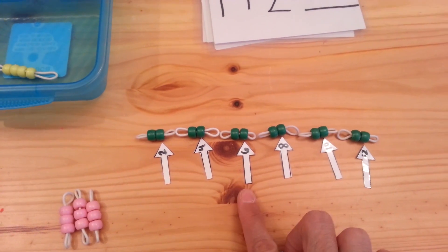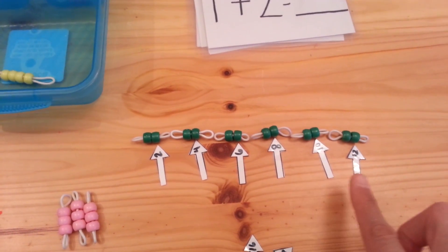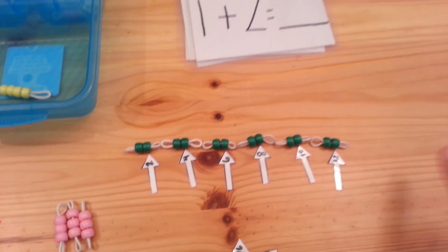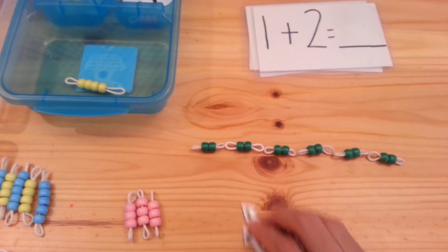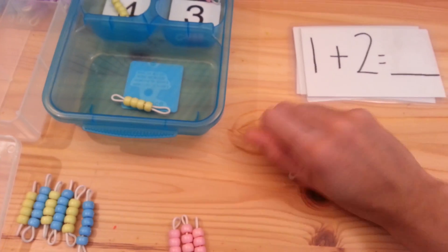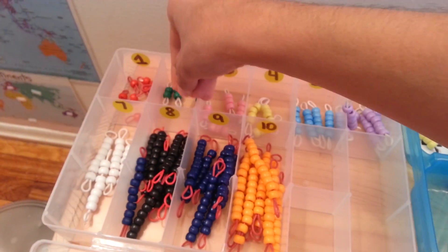And go on and on until they've reached twenty. And then you may want to have them skip count: two, four, six, eight, ten, twelve, fourteen, sixteen, and so on. And when the child is finished working with the beads, you want to encourage them to put them back where they belong.